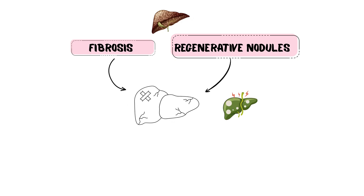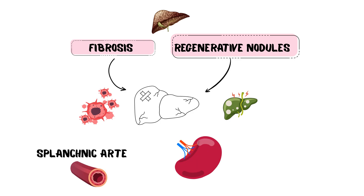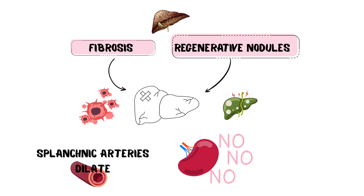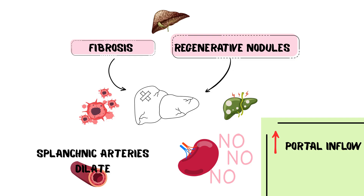There is also a hyperdynamic circulation. Splanchnic arteries dilate due to excess nitric oxide, increasing portal inflow and worsening portal hypertension.